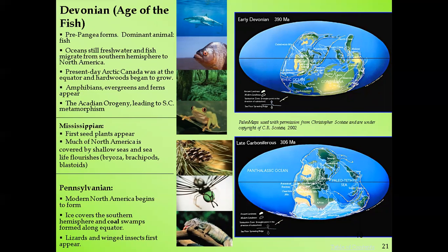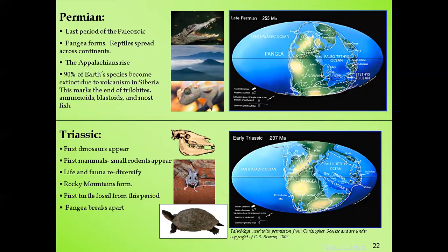During the Pennsylvanian, modern North America began to form. Ice covered the southern hemisphere and cool swamps formed along the equator. Lizards and winged insects first appeared during this period.